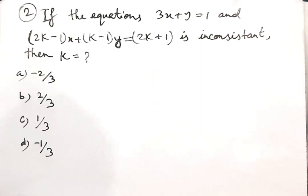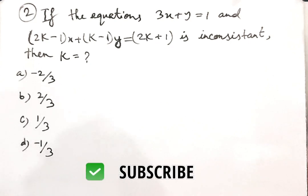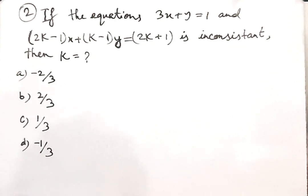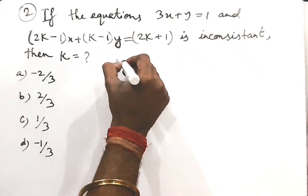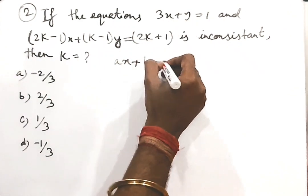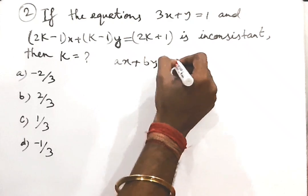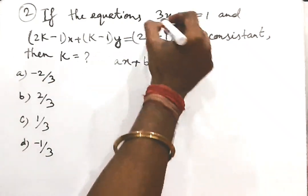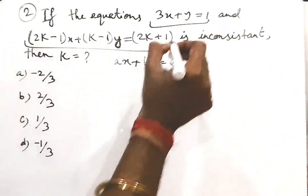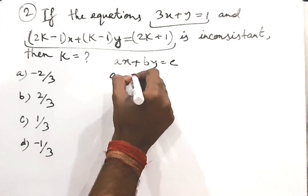Now the question is: if the equations 3x plus y equals 1 and (2k minus 1)x plus (k minus 1)y equals 2k plus 1 is inconsistent, then k equals what? We write it in the form ax plus by equals c, identifying the two equations with coefficients a1, b1, c1 and a2, b2, c2.